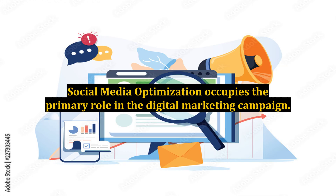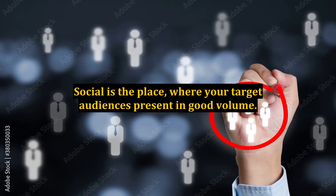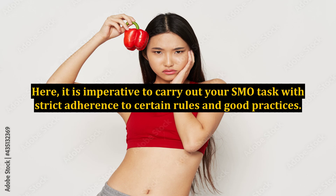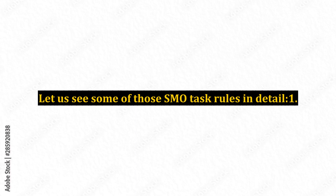SMO task rules. Social media optimization occupies the primary role in the digital marketing campaign. Social is the place where your target audience is present in good volume. A well-designed and well-executed SMO can bring great success to your digital marketing campaign. It is hard to see SMM, social media marketing, and SMO, social media optimization, as separate entities as both go well hand-in-hand. It is imperative to carry out your SMO tasks with strict adherence to certain rules and good practices.